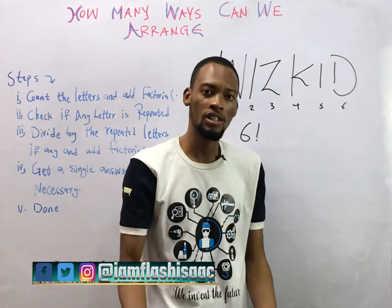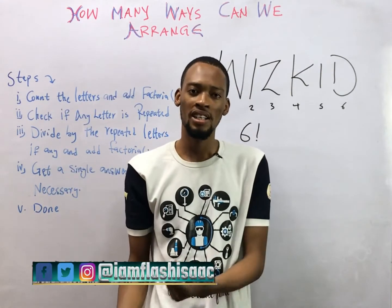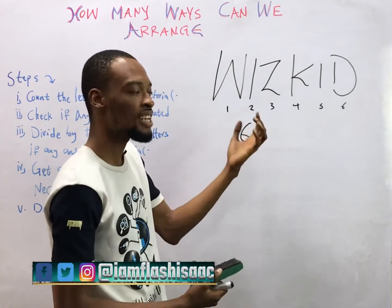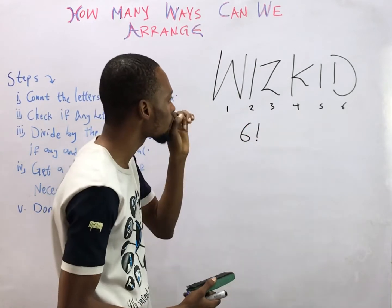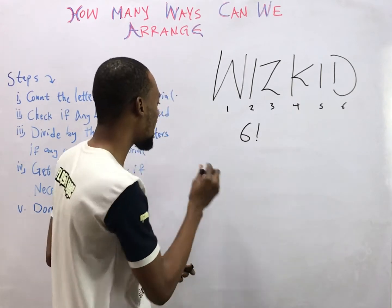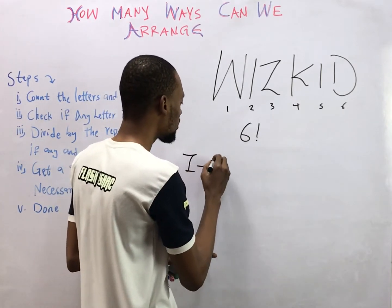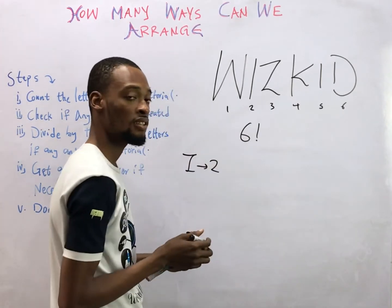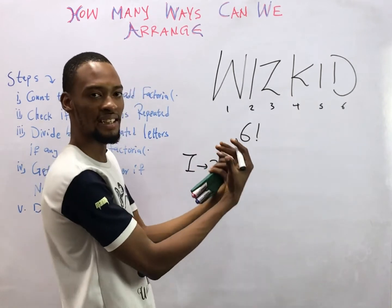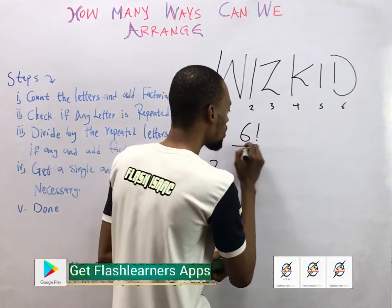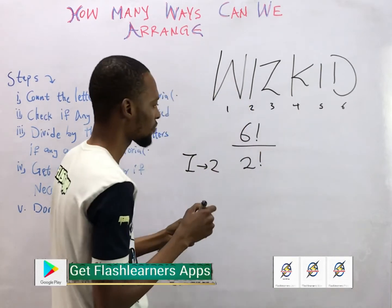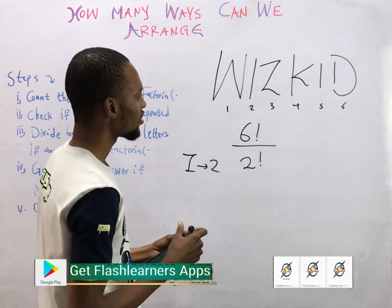Having done this, we check if any letter is repeated in WHISKEY. The letter 'I' appears twice, and that is the only repeated letter. We simply divide by two factorial.